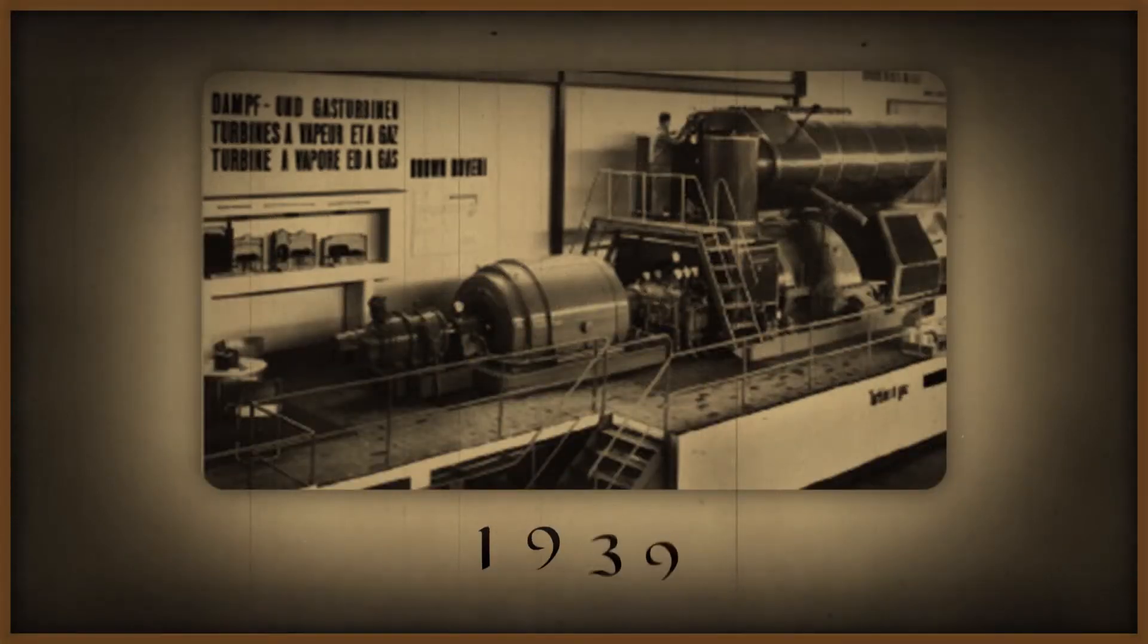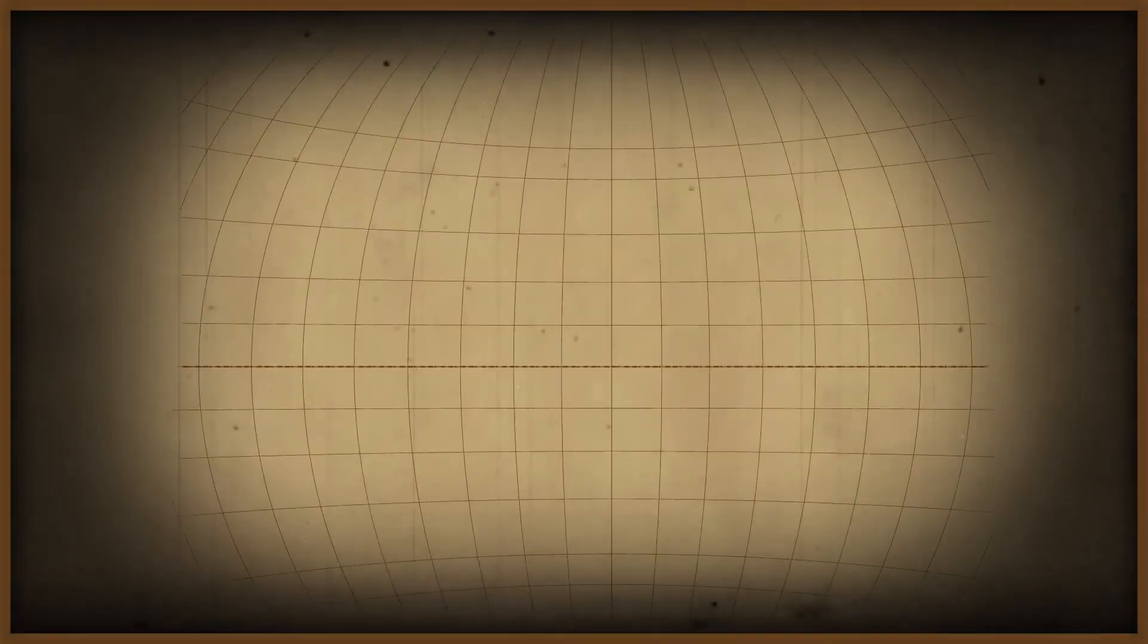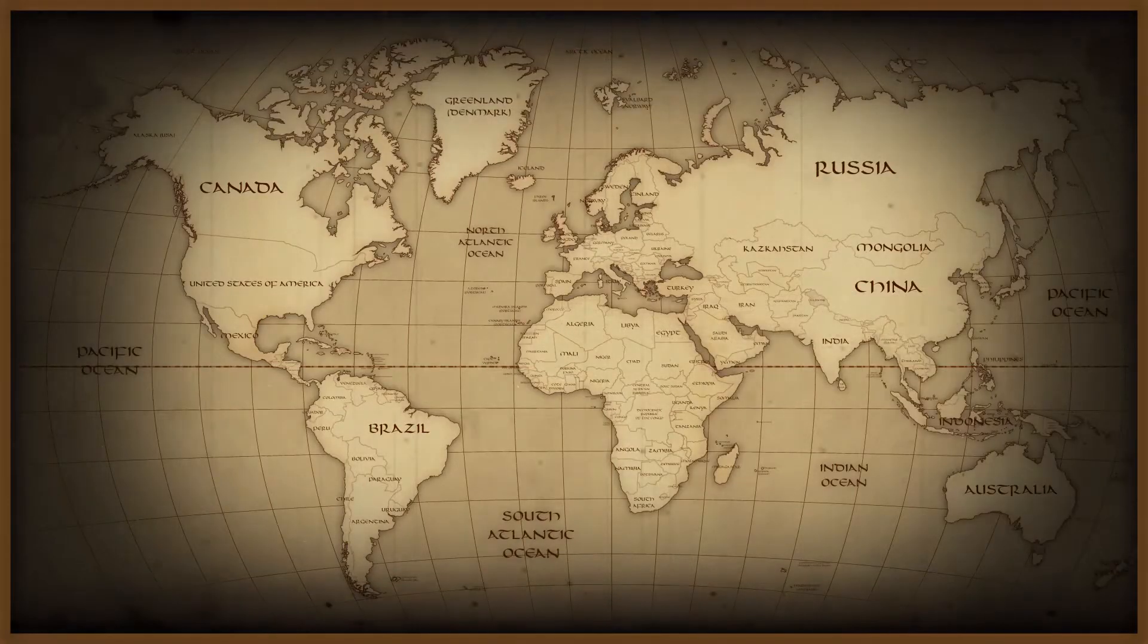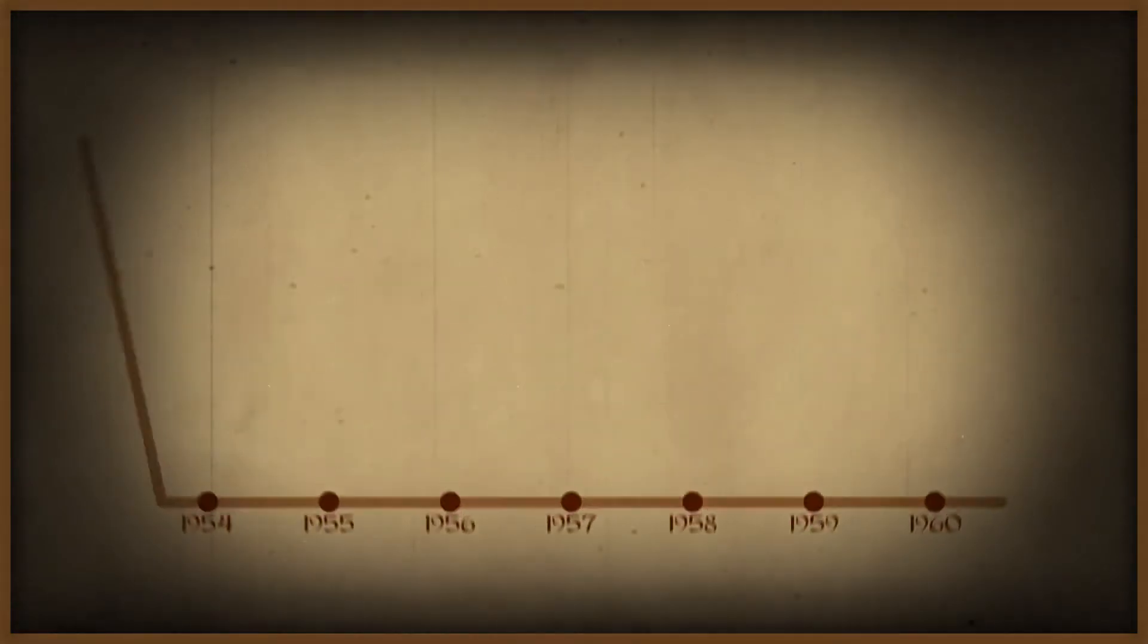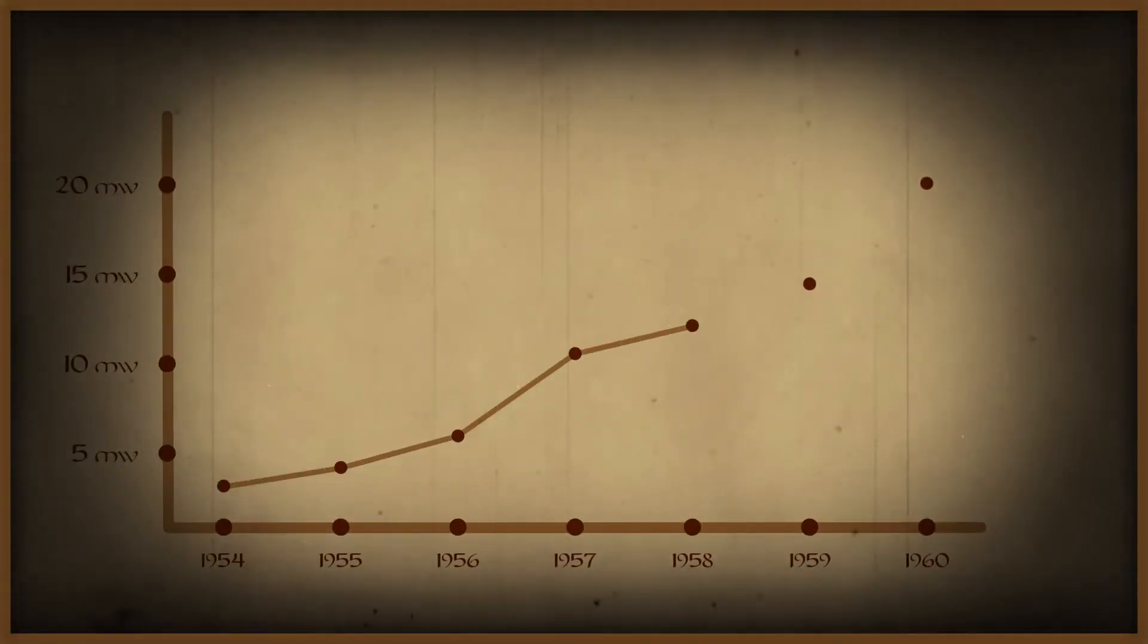Around 80 years ago, the world's first industrial gas turbine began to generate electricity in a power station in Switzerland. By 1960, the most powerful gas turbine reached 20 megawatts of power.